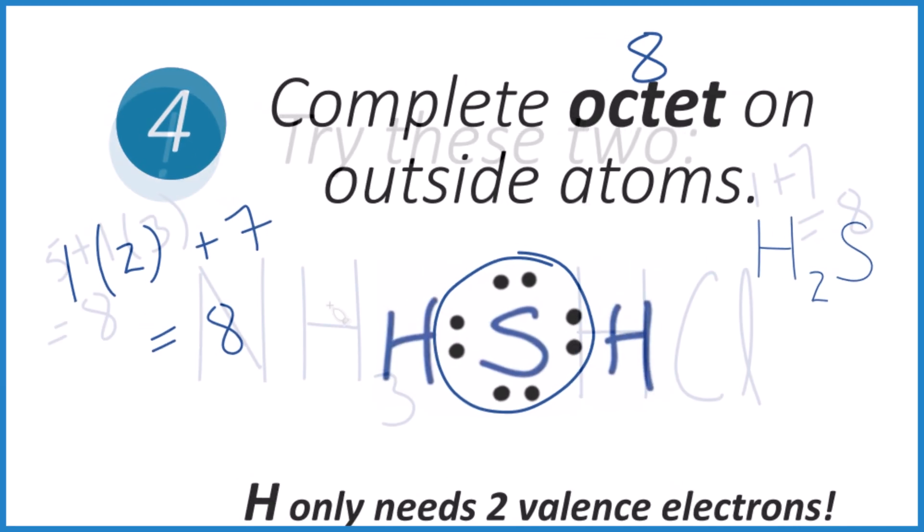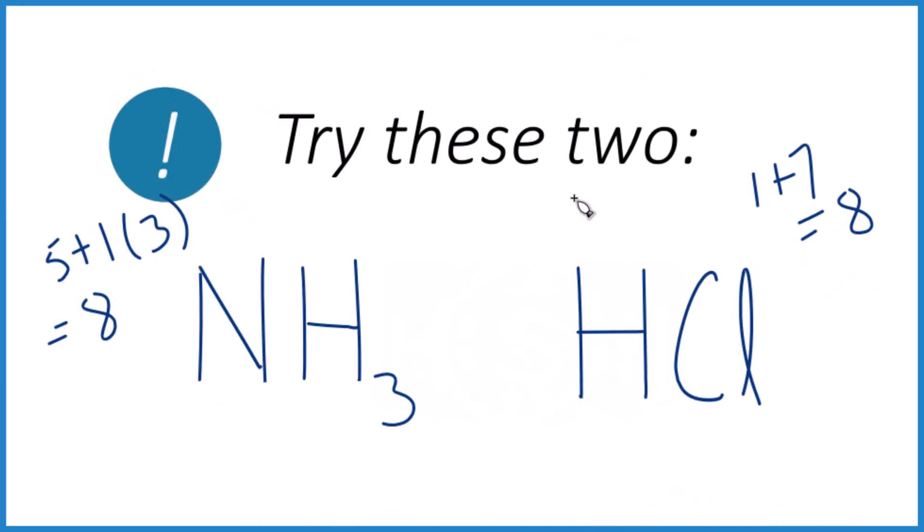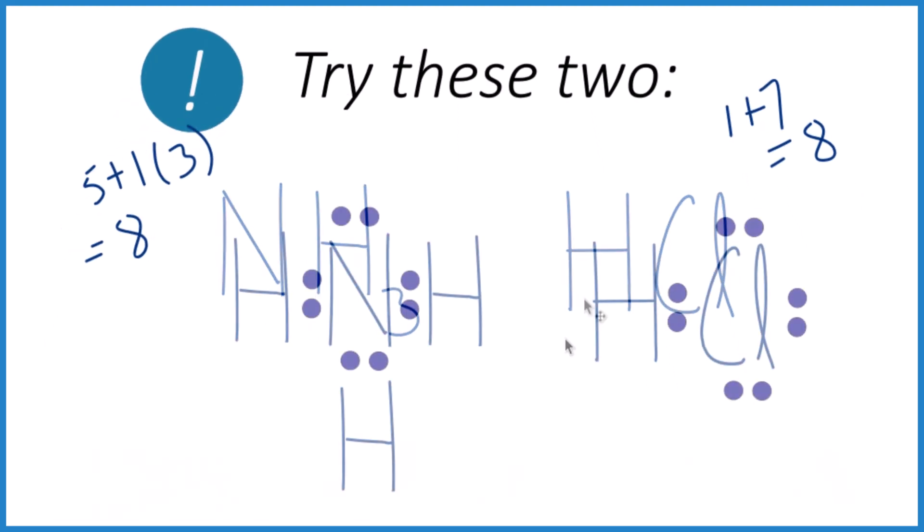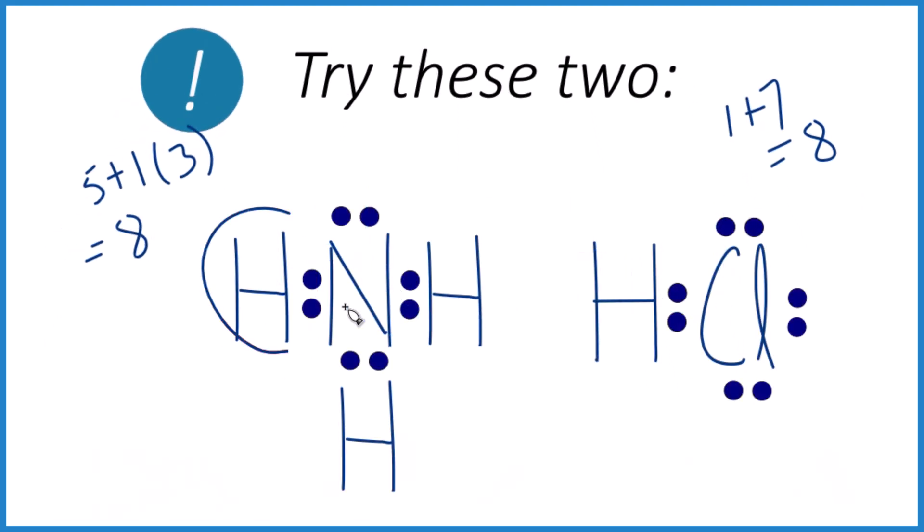So try these. And both of them have a total of eight valence electrons. So you should have ended up with where each hydrogen has two valence electrons. The central atoms have eight, an octet. And we used all eight valence electrons in our Lewis structure. No more, no less.